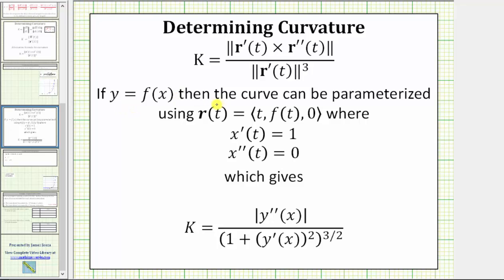If y equals f of x, then the curve can be parameterized using the vector function r of t, where the x component is t, the y component is f of t, and the z component is zero. Then x prime of t equals one and x double prime of t equals zero. Applying the general formula using this parameterization, the curvature simplifies to the absolute value of y double prime of x divided by the quantity one plus the square of y prime of x, all raised to the 3/2 power.